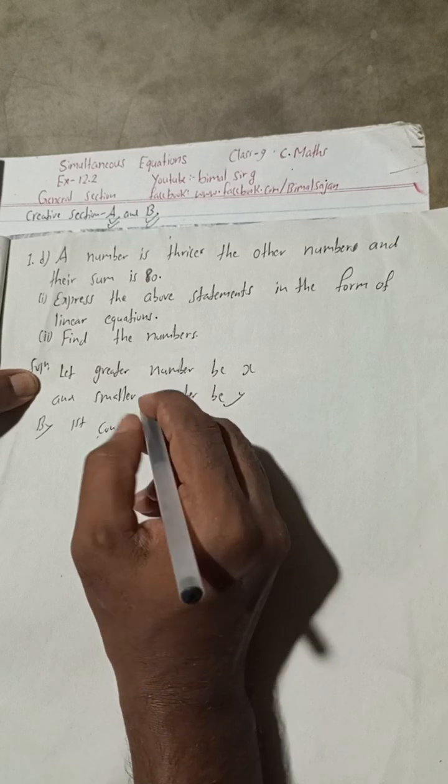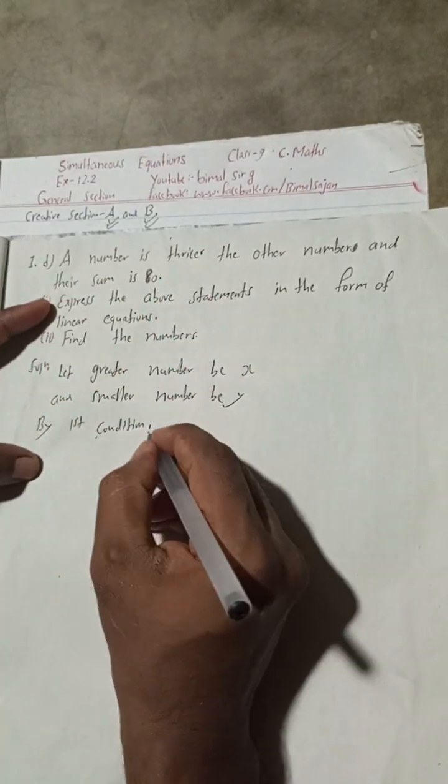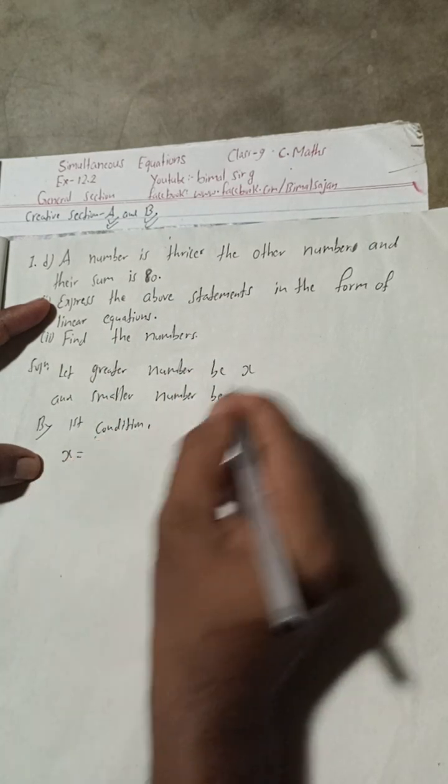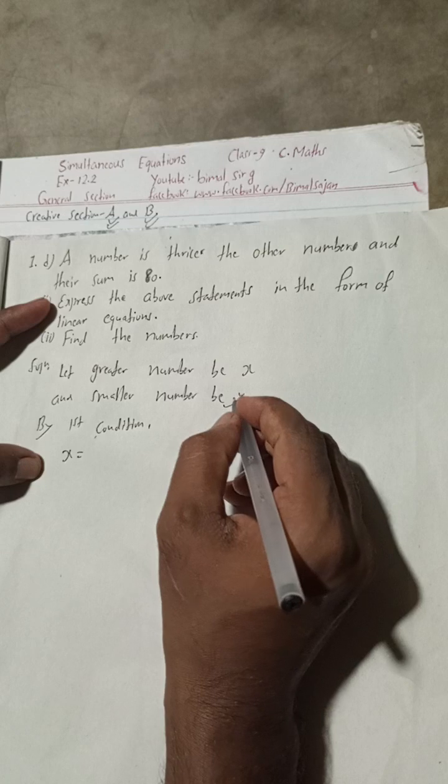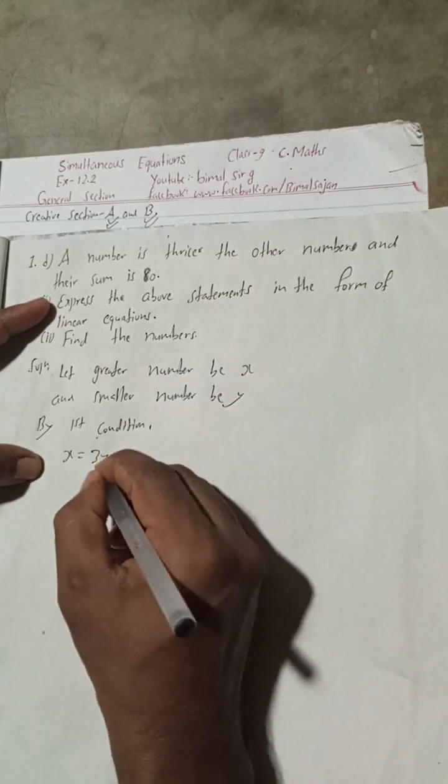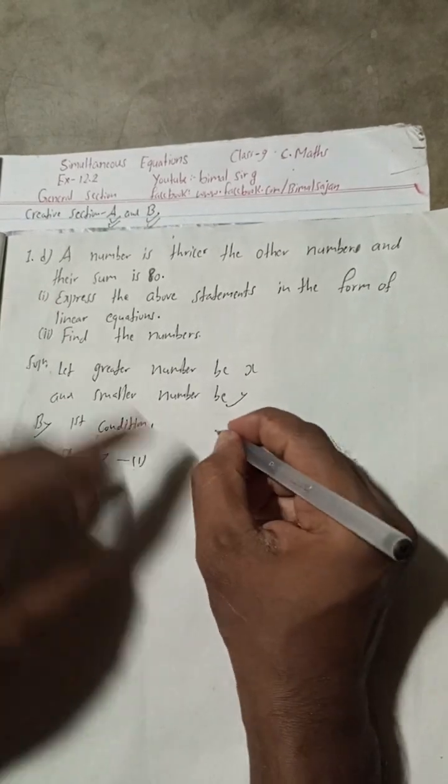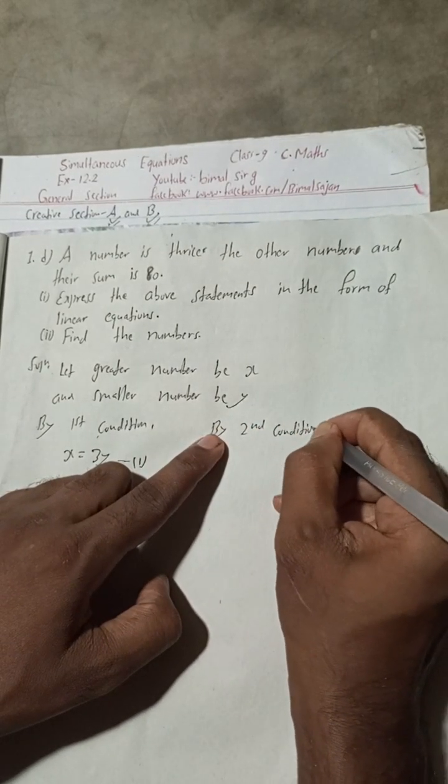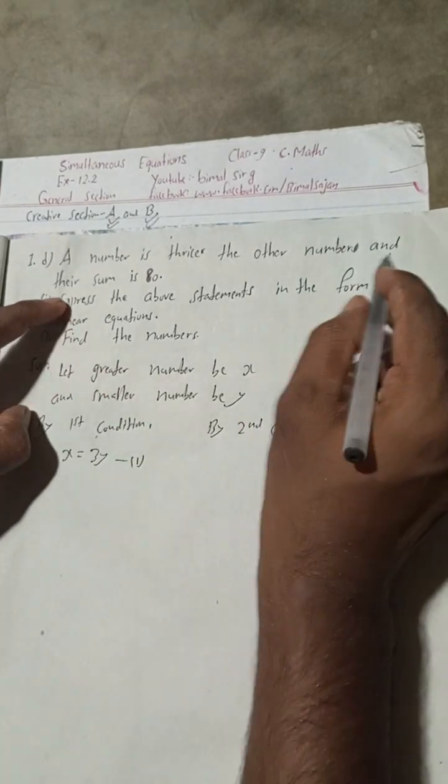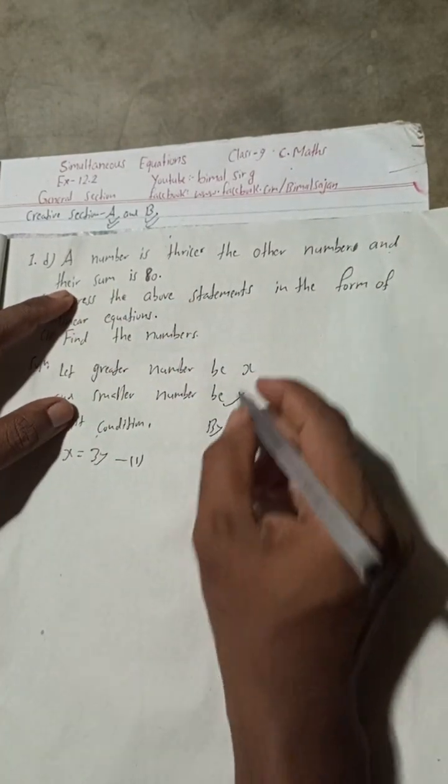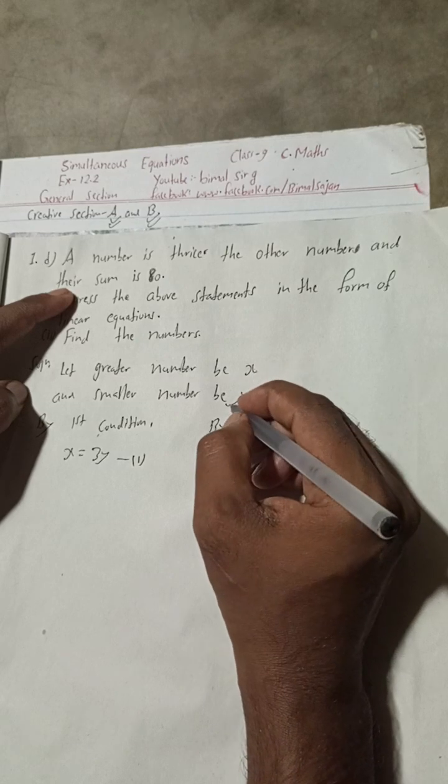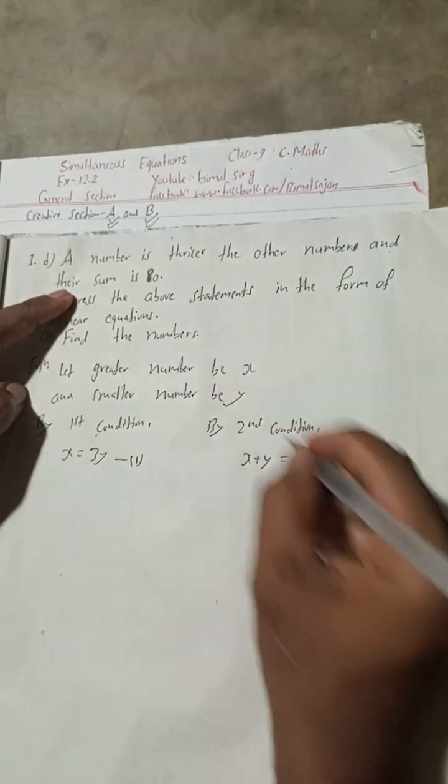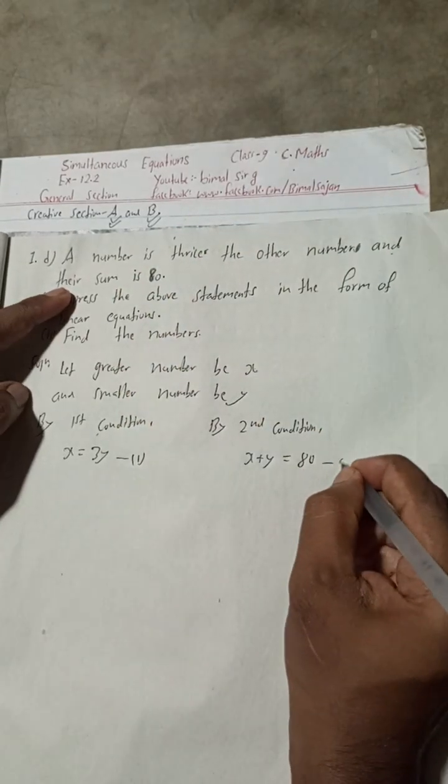By the first condition, our number is thrice, meaning this greater number X is three times the smaller one, so X equals 3Y. This is our equation one. By the second condition, their sum is 80, meaning X plus Y equals 80. This is our equation two.